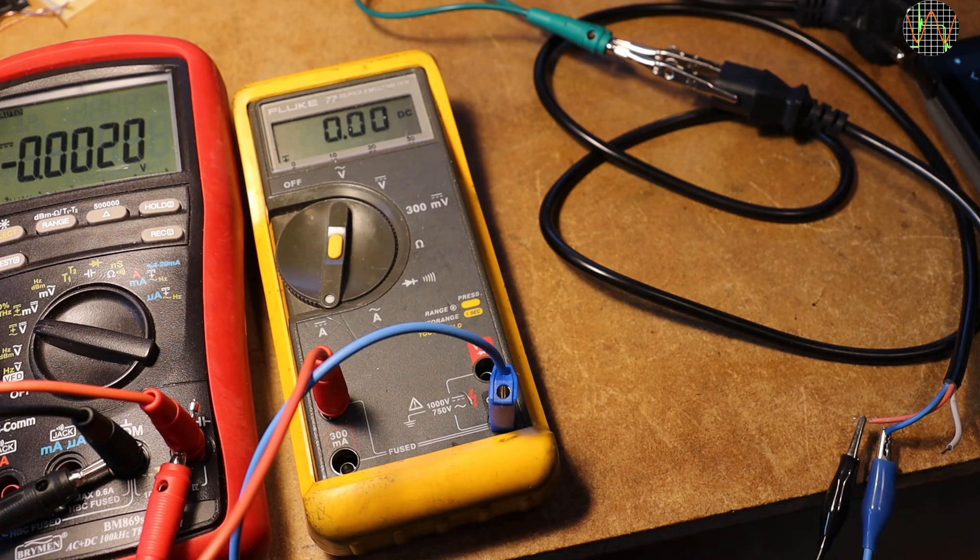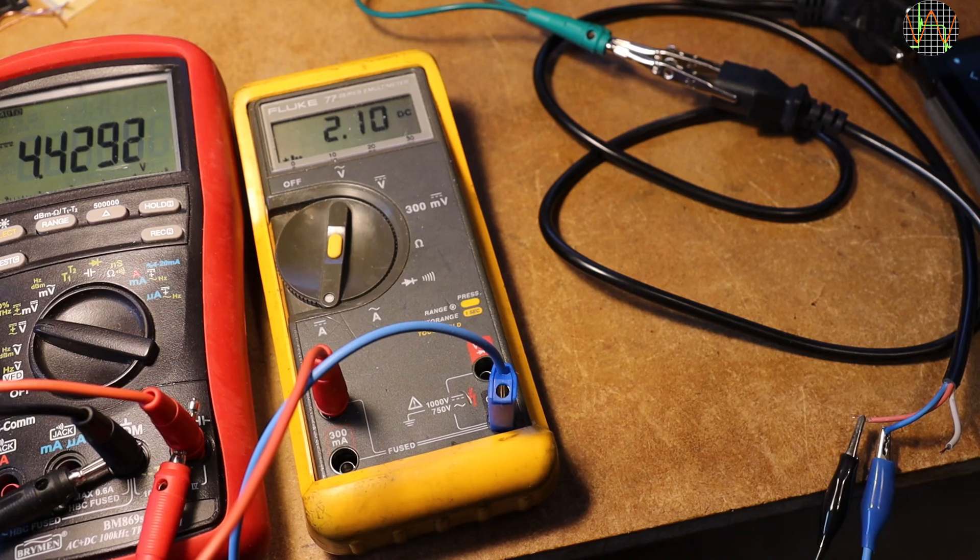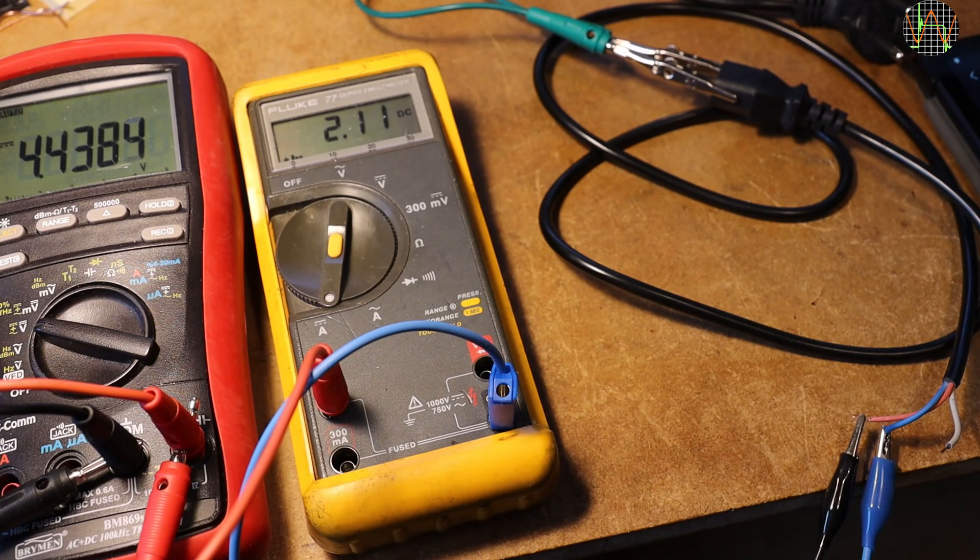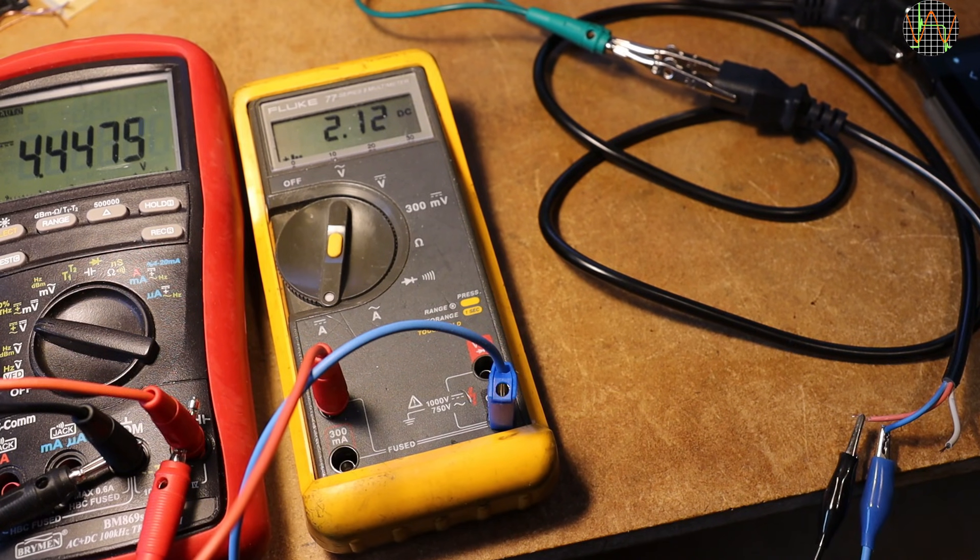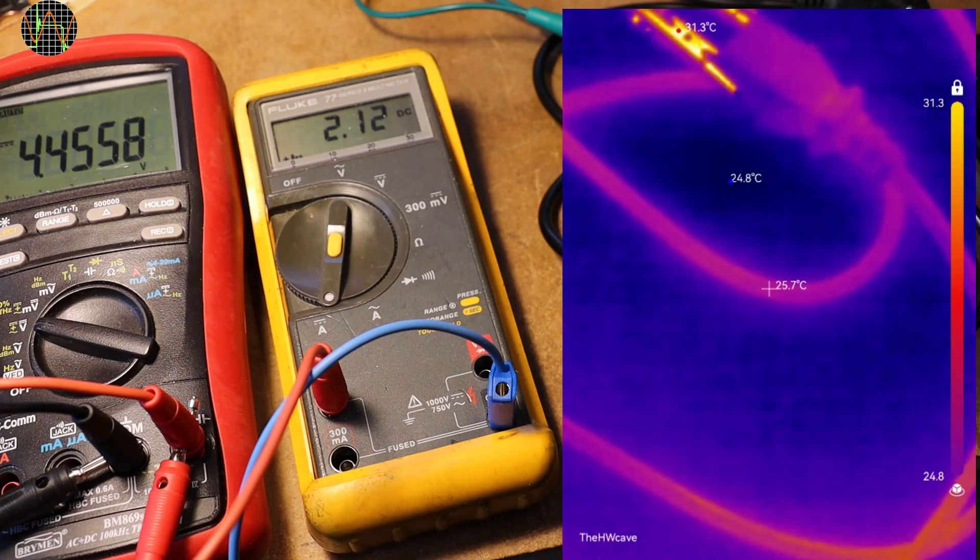I decided to have some fun, shorten the C13 plug and use the other end to pump some current through the cable. The red meter shows the voltage and the yellow one the current. At the same time, I monitor the temperature with a thermal camera.